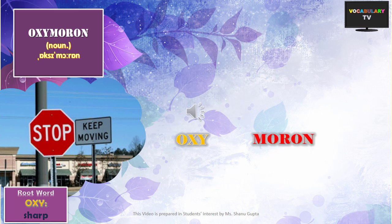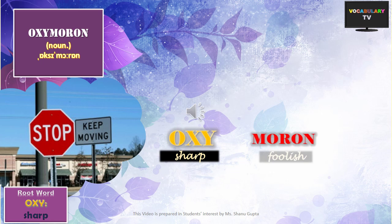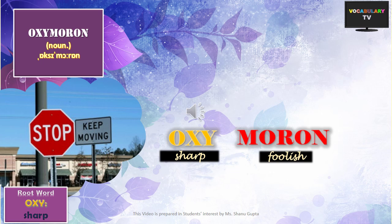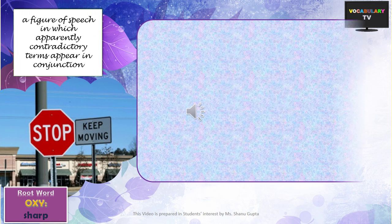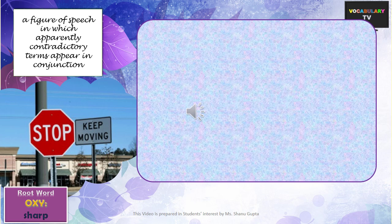Now, on an ending note, we have the root OXY, which shares the same meaning of sharp with the previous roots. While common words like oxygen are based on this root, one word every English lover should know is OXYMORON. Oxy means sharp and moron means foolish, so oxymoron literally means sharp as well as foolish — contradictory, isn't it? An oxymoron is a figure of speech in which contradictory words are used together, and the word oxymoron itself is an oxymoron.